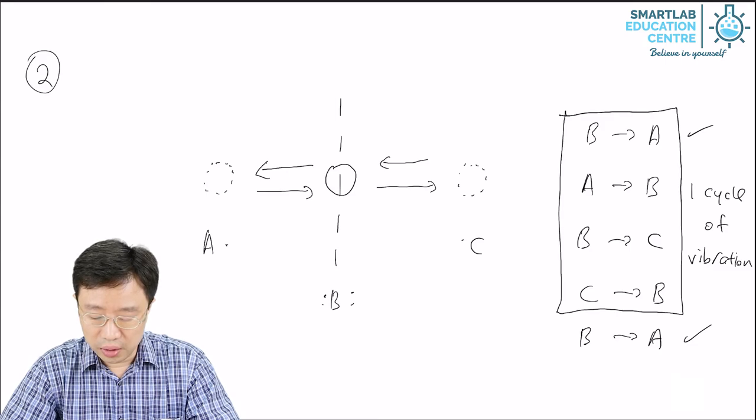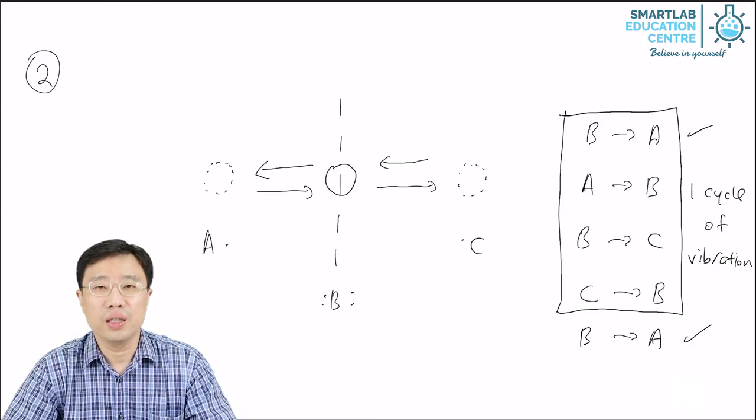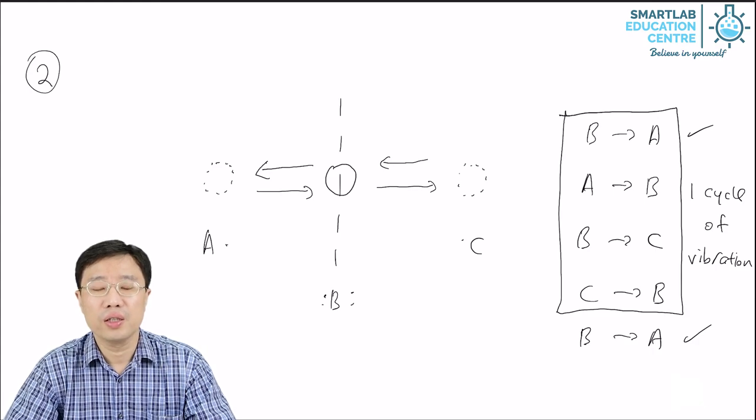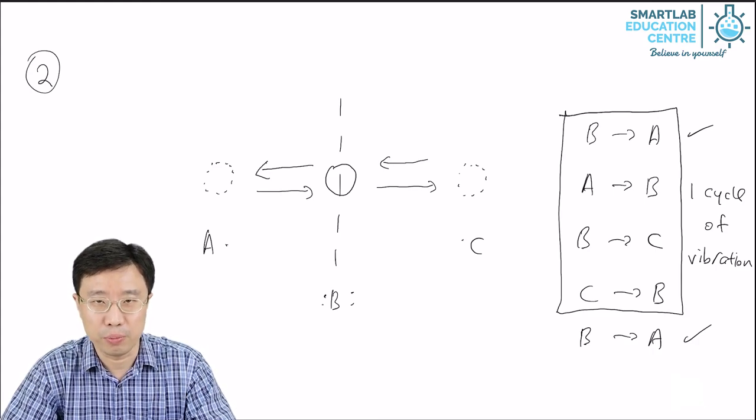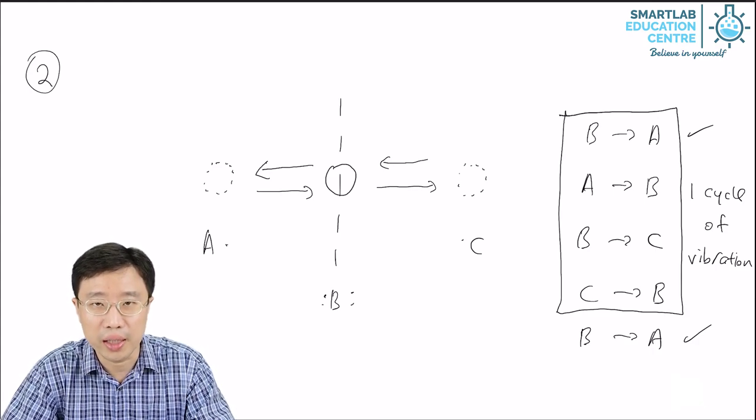So the faster a particle vibrates, the more cycles of vibration you can complete in one second.